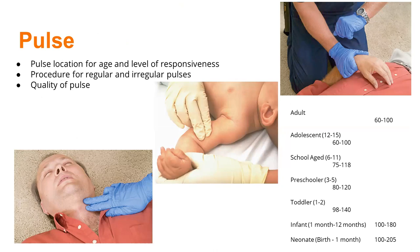If an adult patient is unresponsive and not doing well, palpate the carotid artery in the neck. For pediatric patients, check the brachial artery, located between the elbow and armpit on the inside of the arm. For kids a year or younger, check the brachial pulse. Know all the different pulse rates — if an adult male has a pulse of 40, you know he's bradycardic and something's wrong.